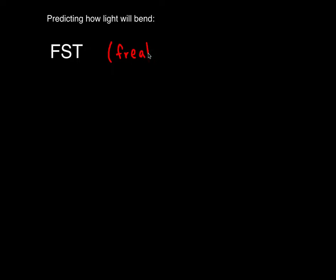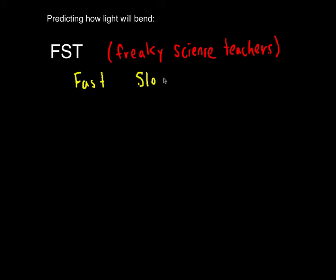We can use our knowledge of whether a medium is a fast or slow medium to predict how light will bend as it refracts. We start with the acronym FST, which you can remember using 'freaky science teachers.' F stands for fast, S stands for slow, and T stands for towards.